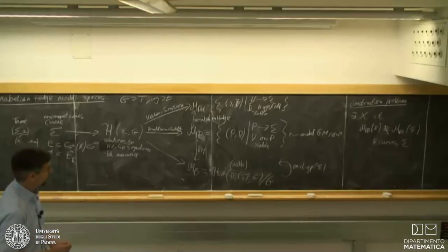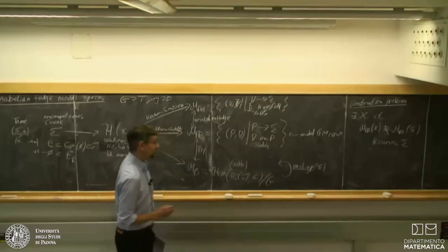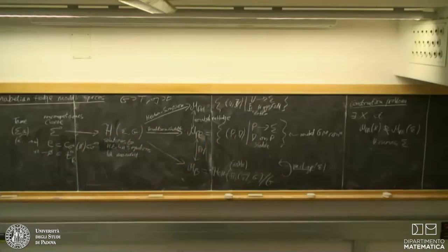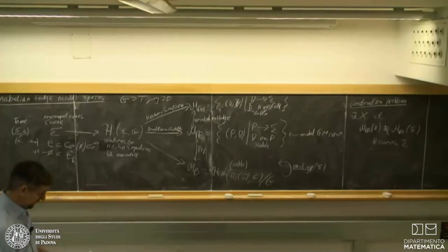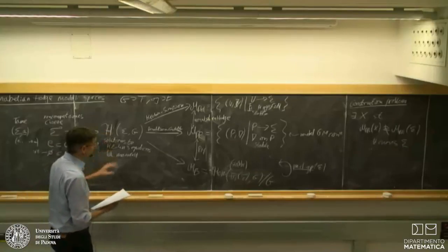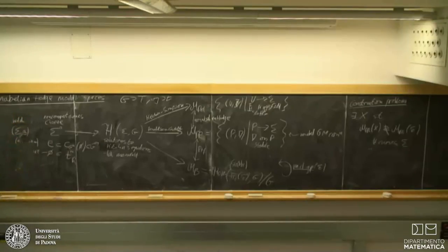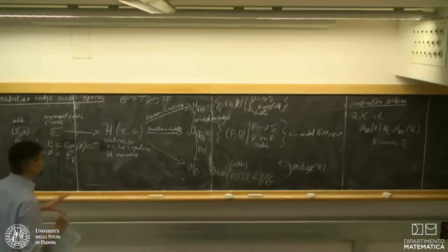For punctured spheres we get actions of type-A braid groups. But these aren't the most general solutions to Hitchin's equations. It's possible to look at the wild picture as well, where we look at things that have higher-order poles. There's extra boundary data that has to be picked in order to get finite-dimensional hyperkähler spaces.